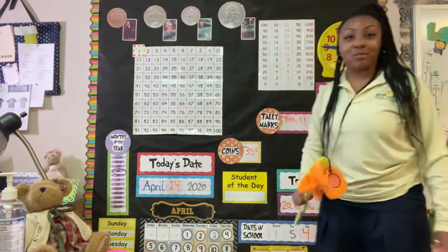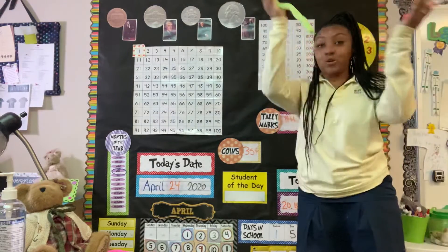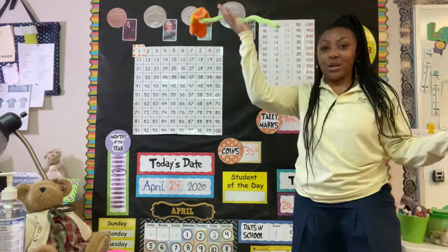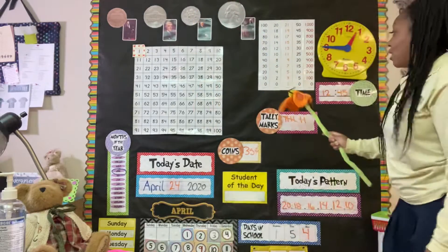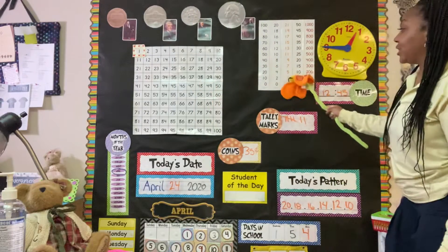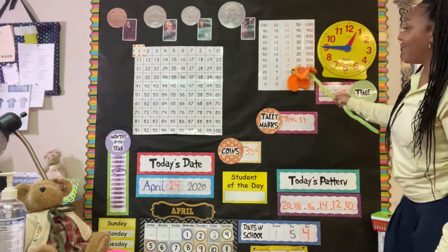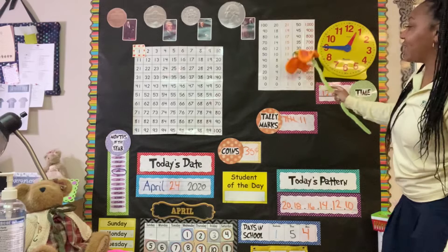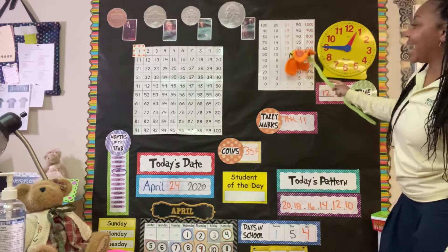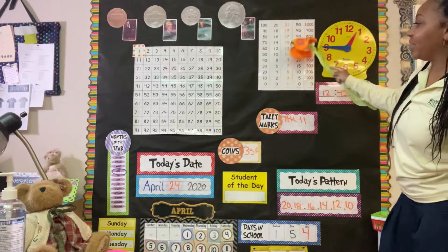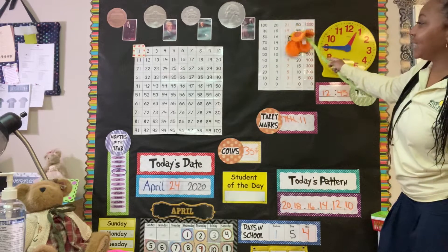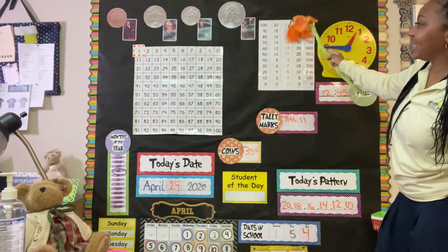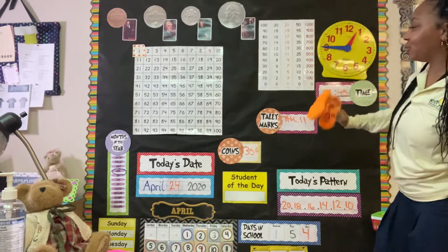Let's do our odd numbers — numbers that don't balance out equally on both sides. Ready? 1, 3, 5, 7, 9, 11, 13, 15, 17, 19, 21.